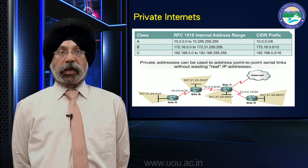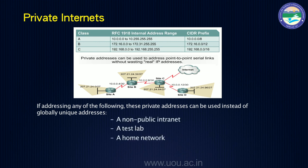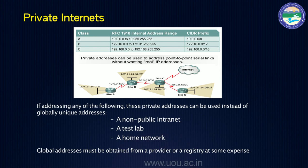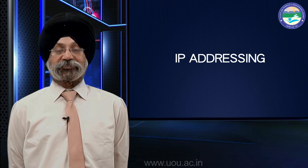These private addresses can be used for non-public internets, for test labs to test how networks behave before going live, and for home networks. However, if a globally unique address is needed, it must be purchased from a service provider. In this lecture, we learned the advantages of subnetting, networks with and without subnets, variable length subnetting, and private internets. Thank you.